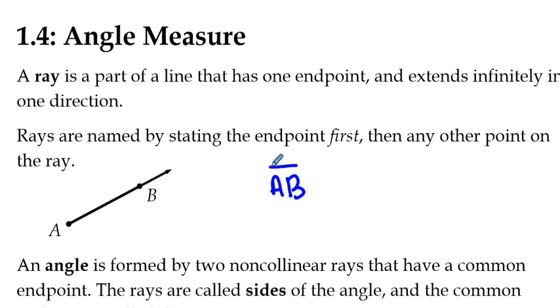We need the endpoint first. So in this case, our ray has an endpoint at A and extends in the direction of B. Since our endpoint is at A, we do not put an arrow over top of the A. But since it goes in the direction of B, we put an arrow over top of that one.